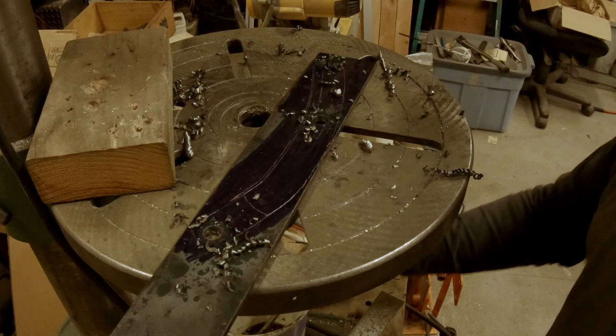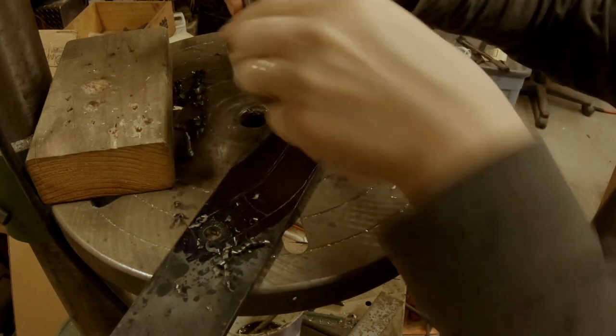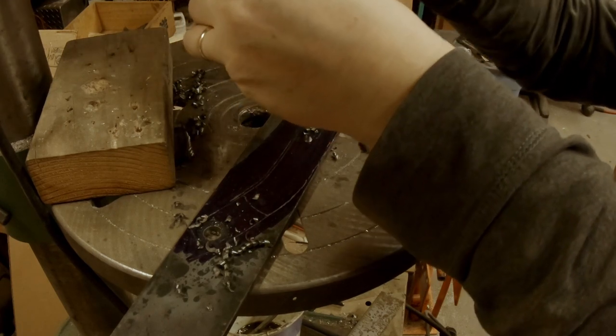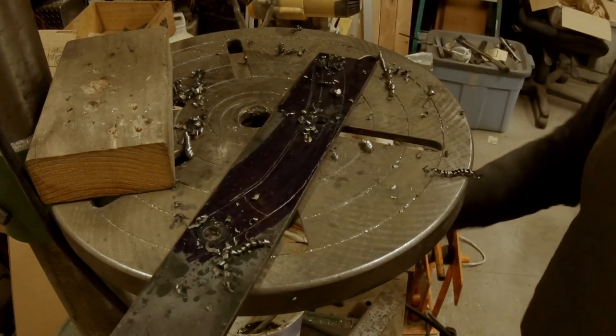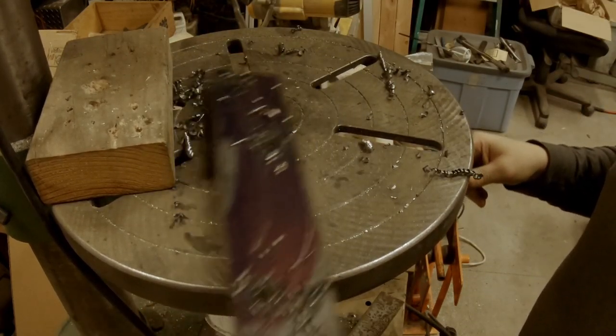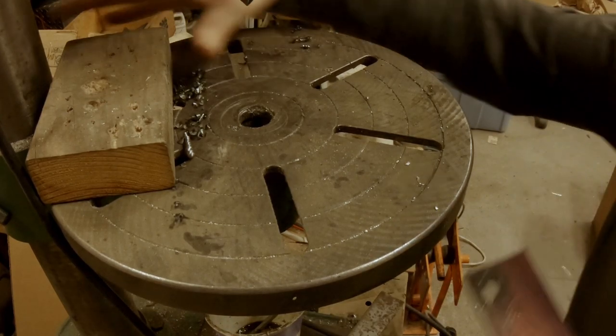That's good. We got a chamfering bit. We'll chamfer these holes. That's going to give us a nice edge that's broken. It's going to keep the threads of the bolts from hanging up on it and not have any little chunks of metal getting in the threads trying to gall things up.